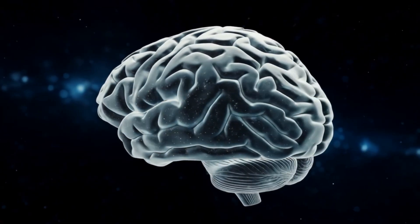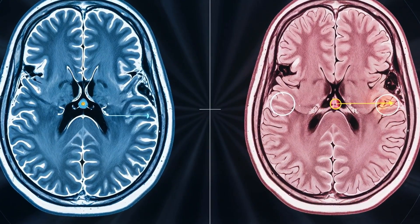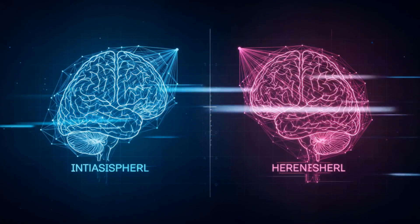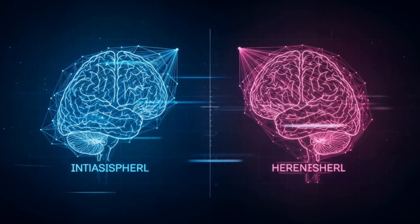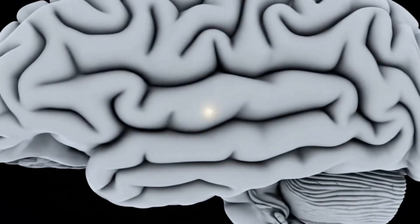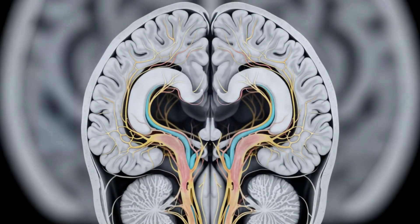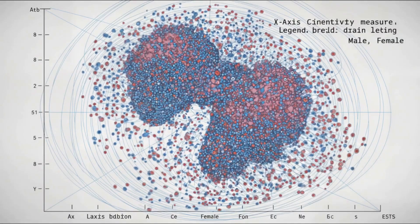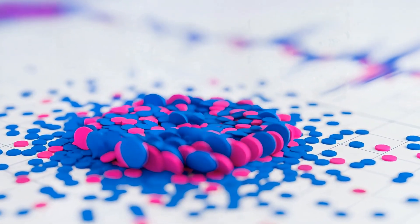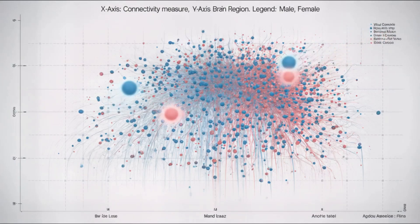So if size isn't the big differentiator, what about the way our brains are wired up? This is where things get really interesting. Some studies suggest that male brains might have more connections within each hemisphere, while female brains might have stronger connections between the two hemispheres. The corpus callosum, that's the big bundle of fibers connecting the two hemispheres, shows some variation between males and females, but the overlap is enormous. And remember, we're always talking about averages. There are plenty of males with typically female connectivity patterns and vice versa. Our brains are more like unique mosaics than strictly male or female patterns.